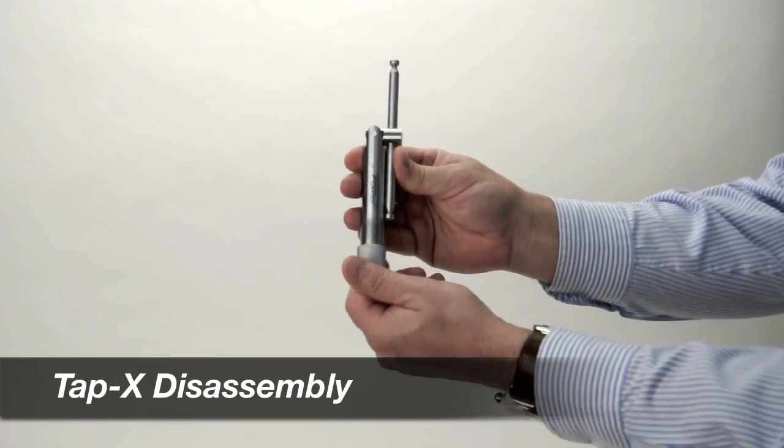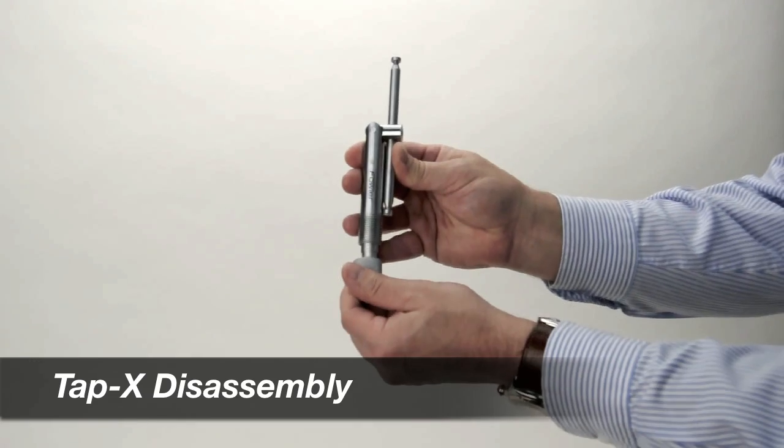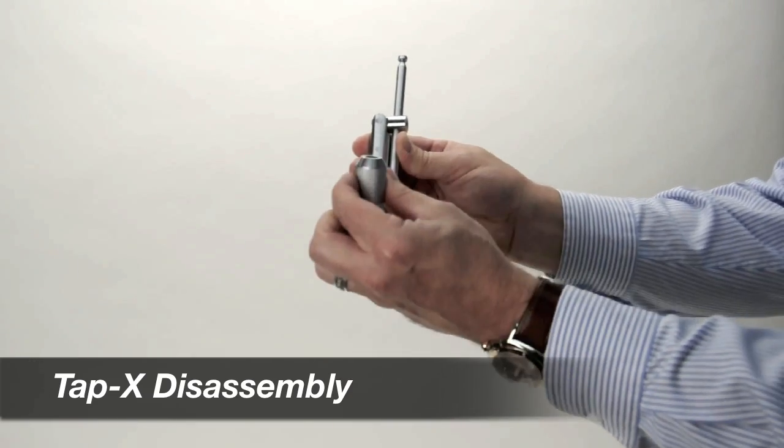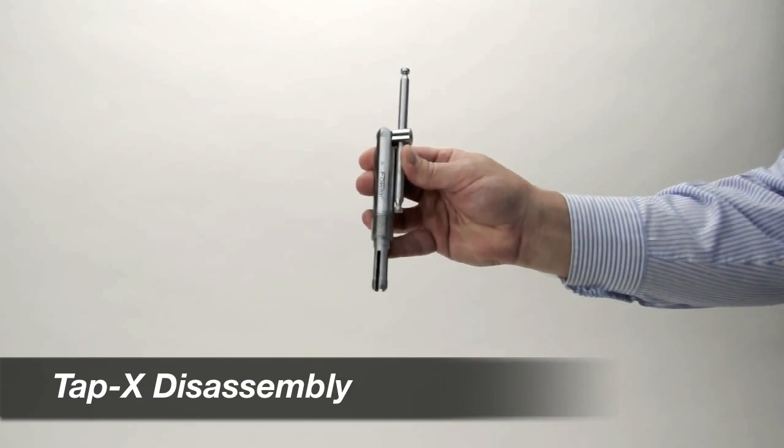To disassemble the TAP-X tap wrench for use, first remove the knurled sleeve. Once the sleeve is off, remove the collet.